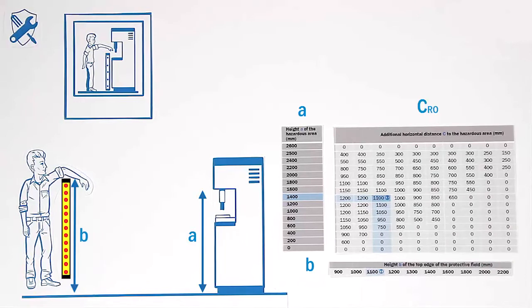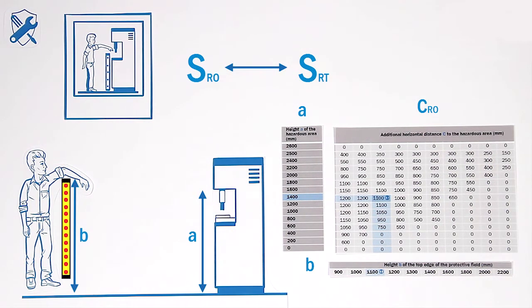The resulting minimum distance S reaching over has to be compared versus the S reaching through value. The bigger value is leading.